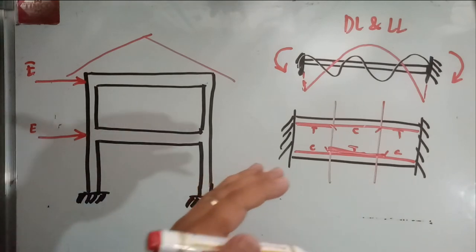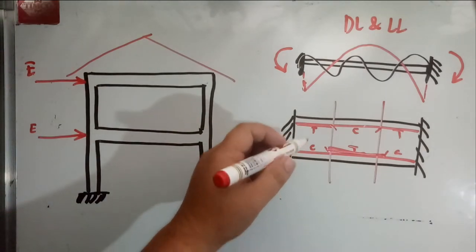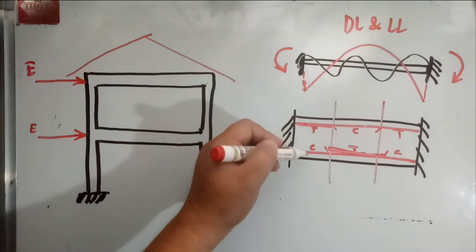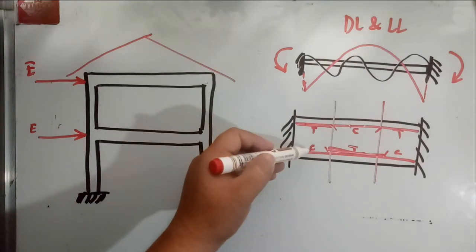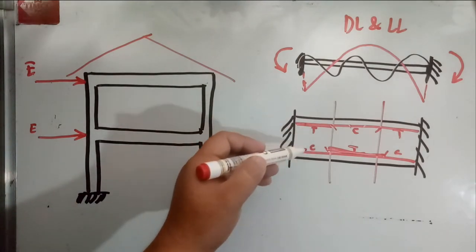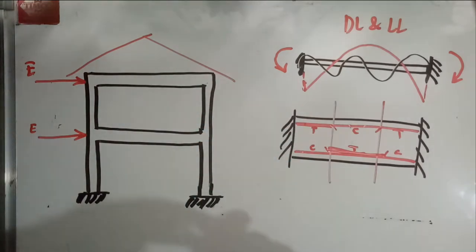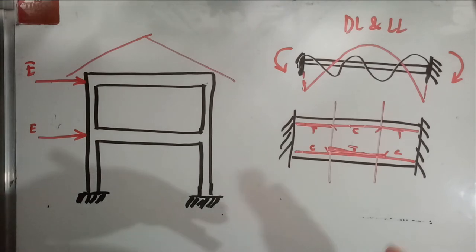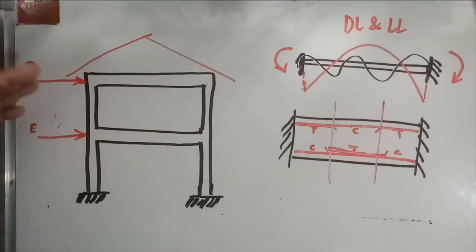Refer to Section 418 of NSCP 2015 for provisions on this. There are provisions specifying that compression reinforcement should not be less than one-third of the tension reinforcement, especially when designing framing systems to resist earthquake loads.